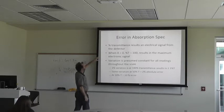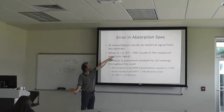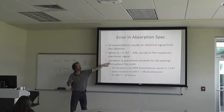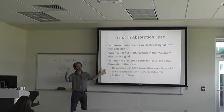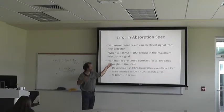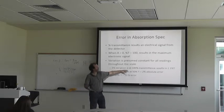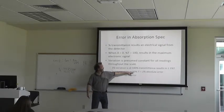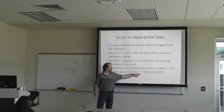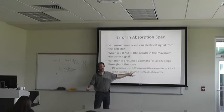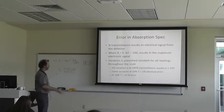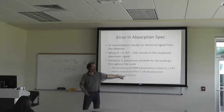Errors in your absorbance spec: the percent transmittance results in an electrical signal from the detector. When absorbance is zero, percent transmittance is 100, which results in the maximum electric signal. The variation in that electrical signal is presumed to be constant throughout the scale from zero to 100%. So a 1% variation at 100% transmittance results in ±1% transmittance. Versus the same variation at 50% equals 2% absolute error, because 1% of 50% is 2% — it basically doubles the error. At 10% transmittance, that makes it a 10% error.